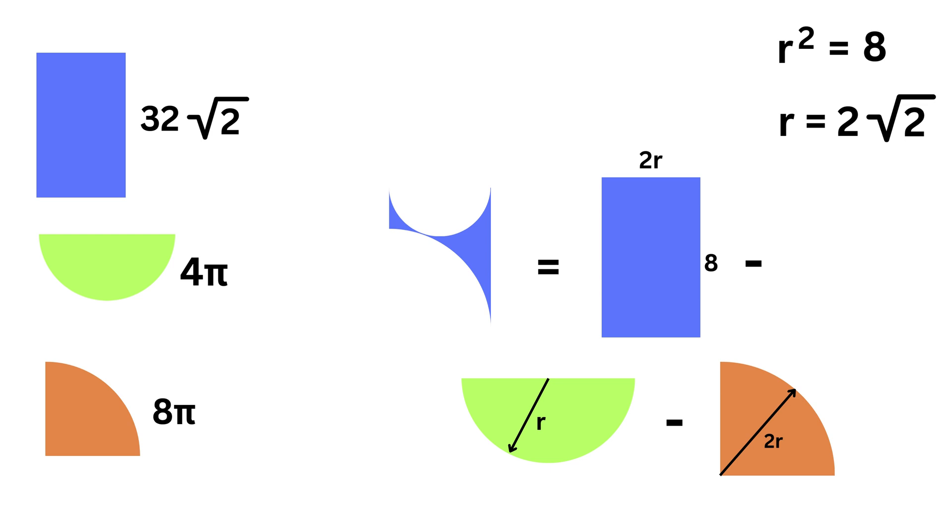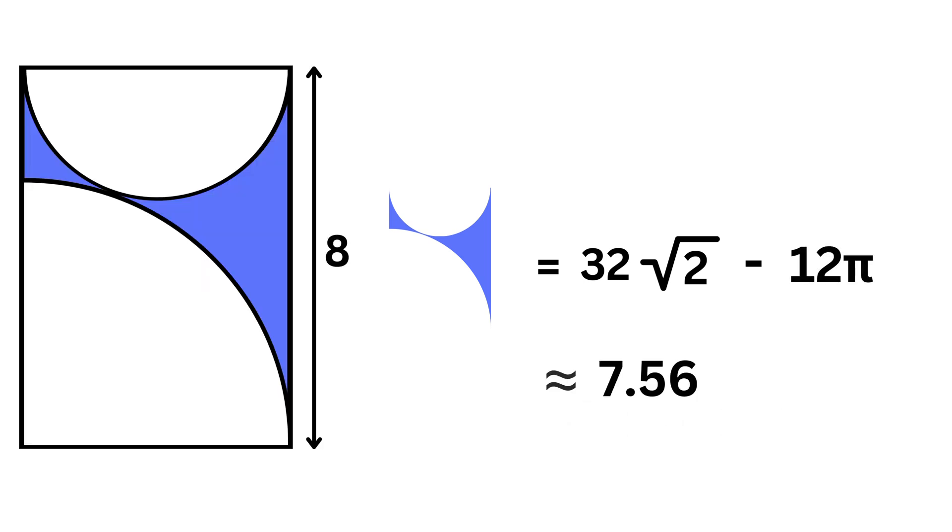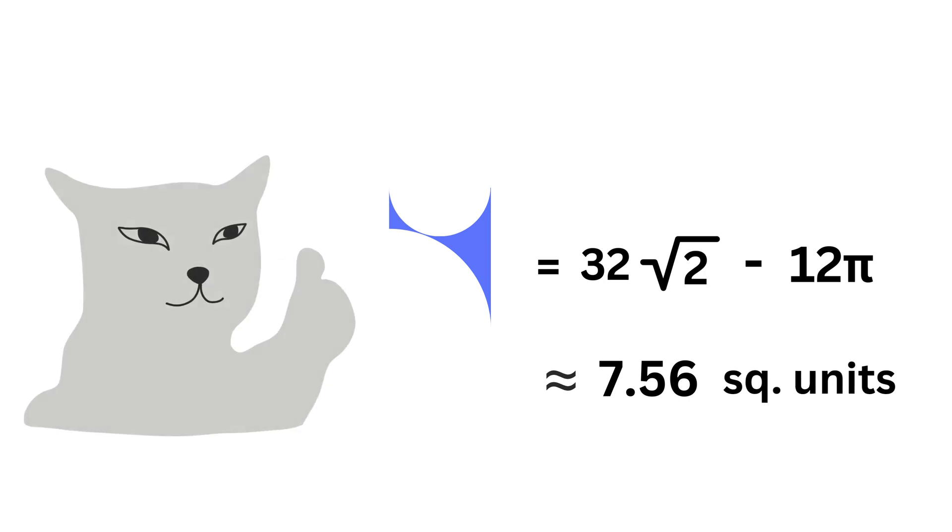So the area of this shaded region will be 32 root 2 minus 4 pi minus 8 pi or 32 root 2 minus 12 pi, which is roughly 7.56. Don't forget to put the square units.